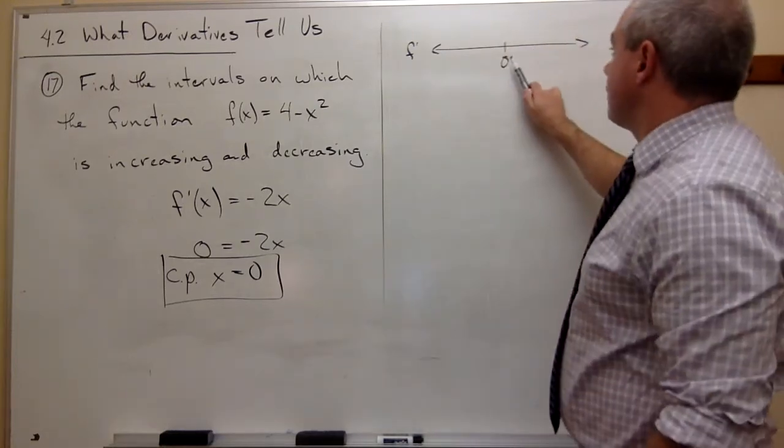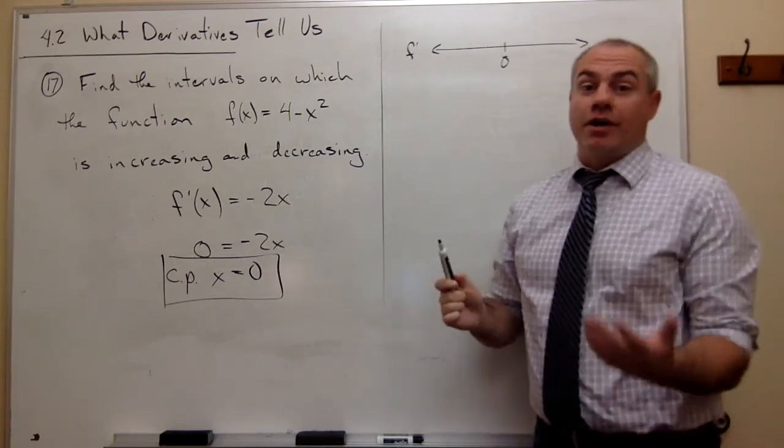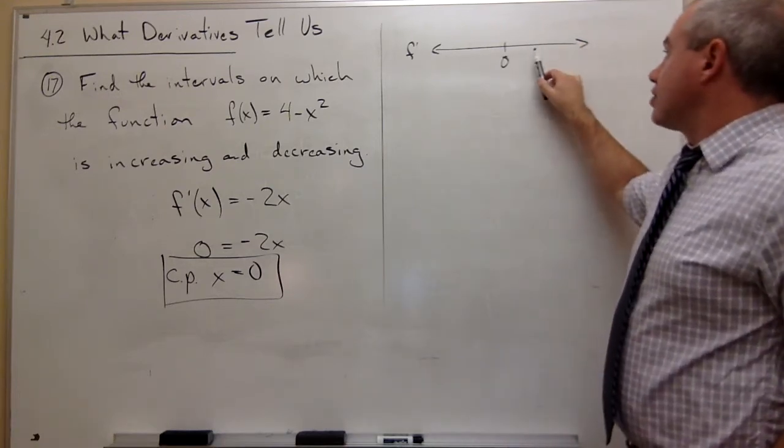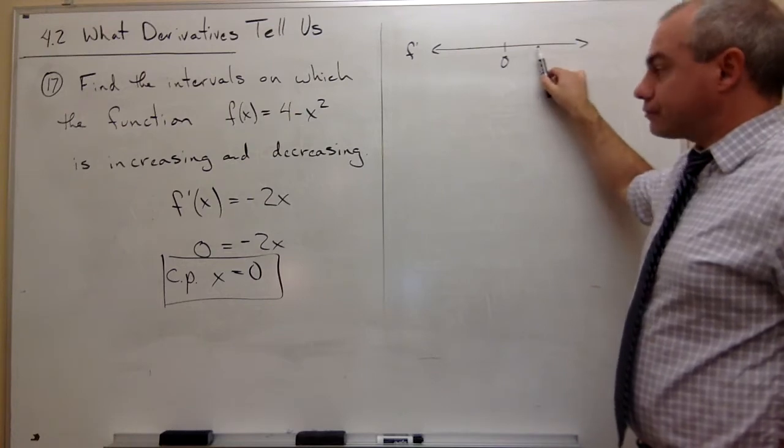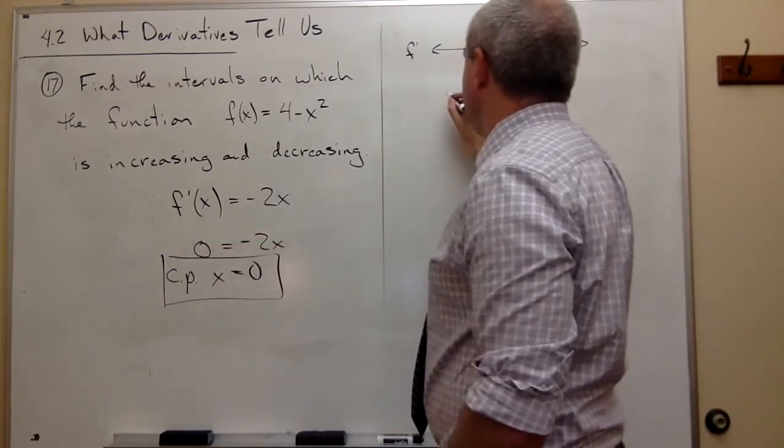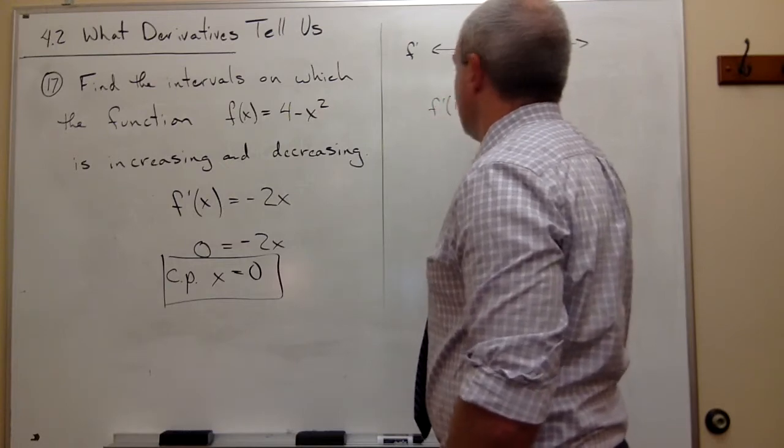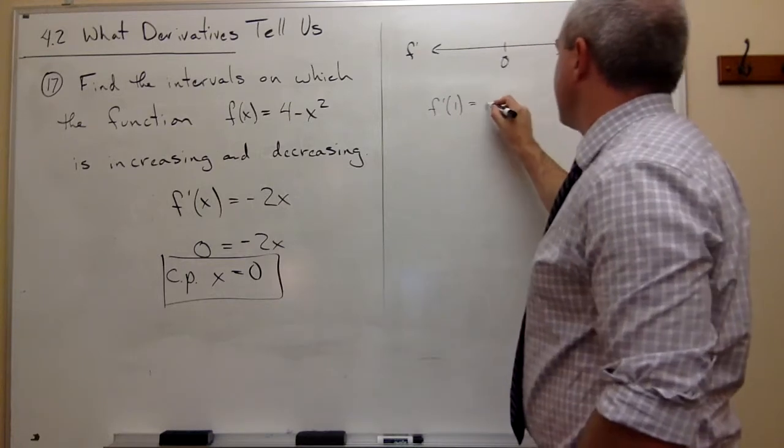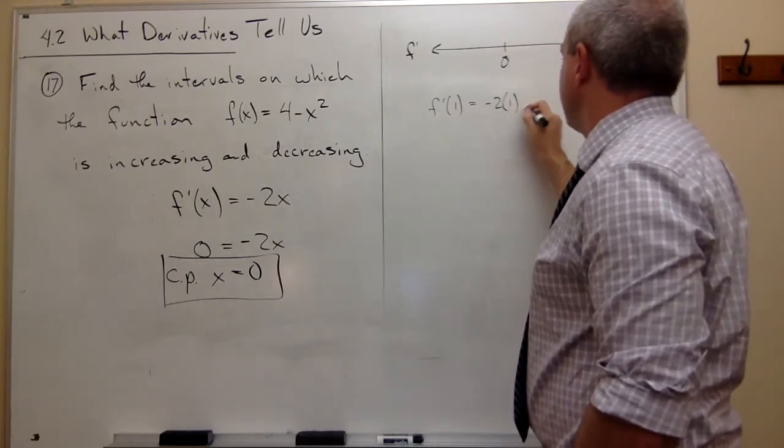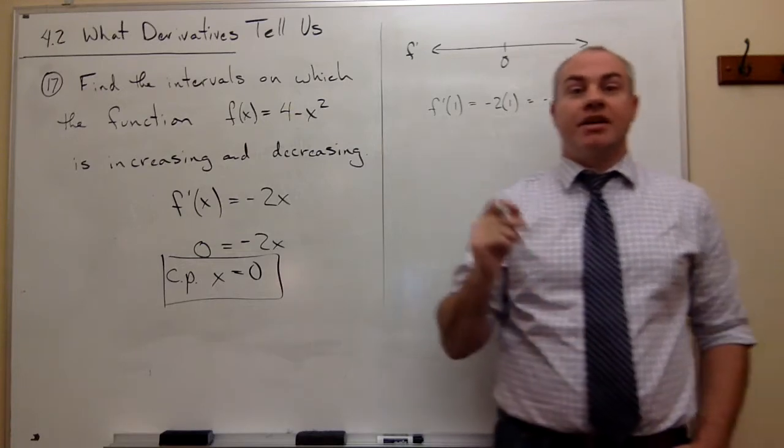If I take a number bigger than 0, it doesn't matter which one, I just need to take one. So let's take the number 1. Plug it into the first derivative. If I look at f'(1), I plug it in and I get -2 times 1, which is -2. And specifically, what I care about is that it's negative.